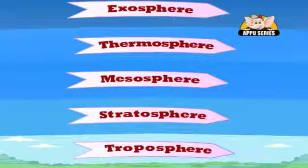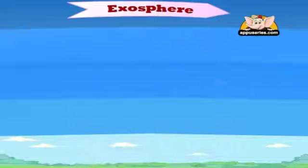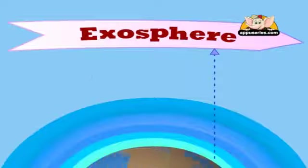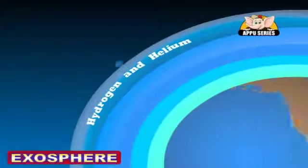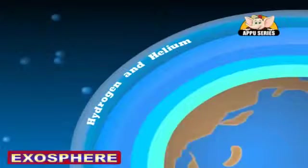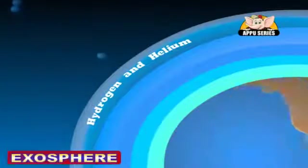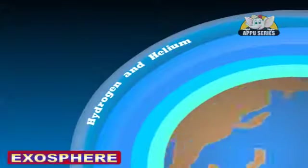The exosphere starts 500 km above the earth and is the highest layer. It starts at the top of the thermosphere and continues until it merges with the interplanetary gases or space. In this region of the atmosphere, hydrogen and helium are the prime components and are only present at extremely low densities.